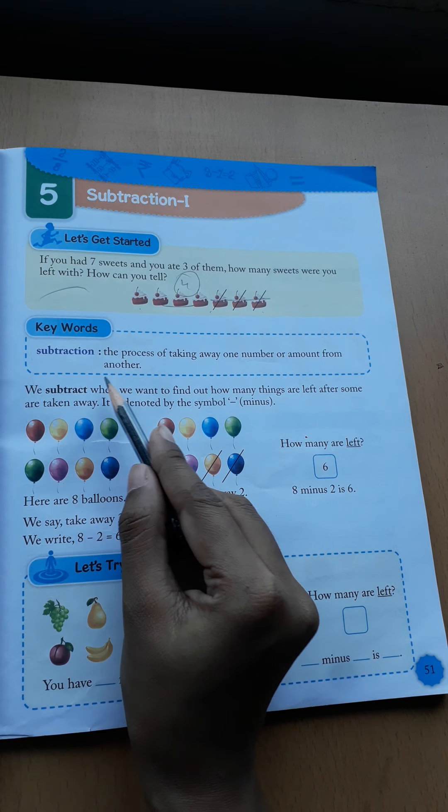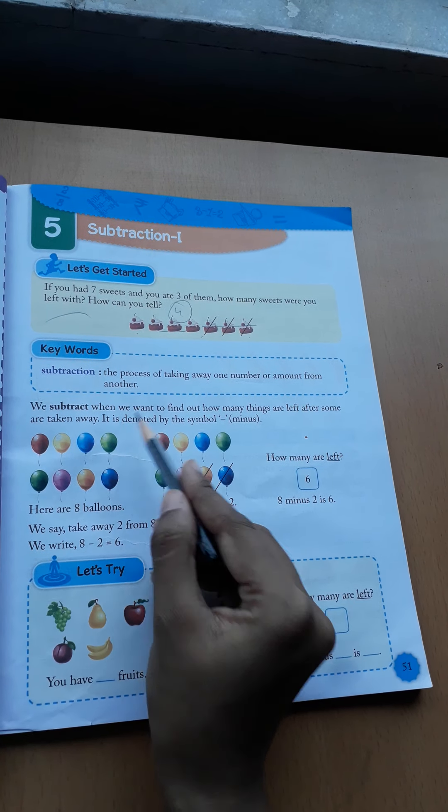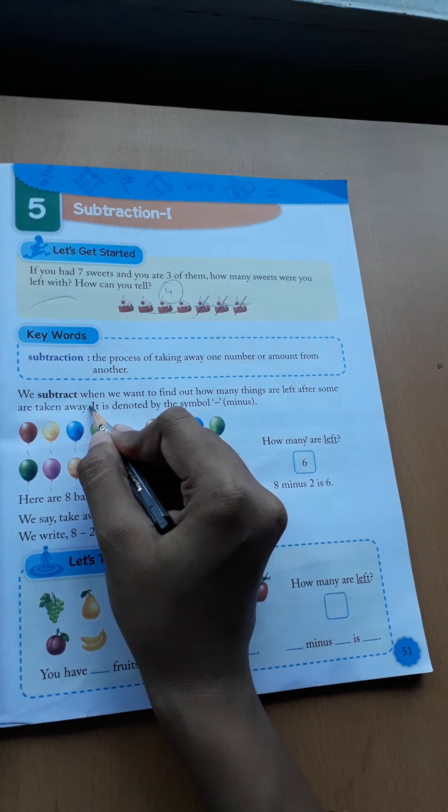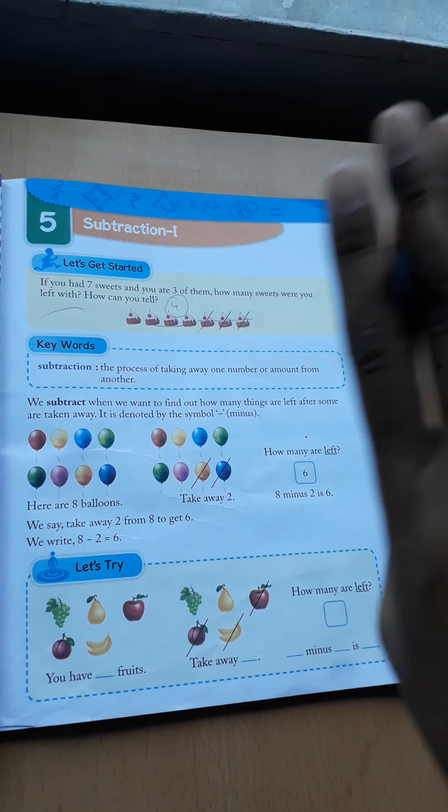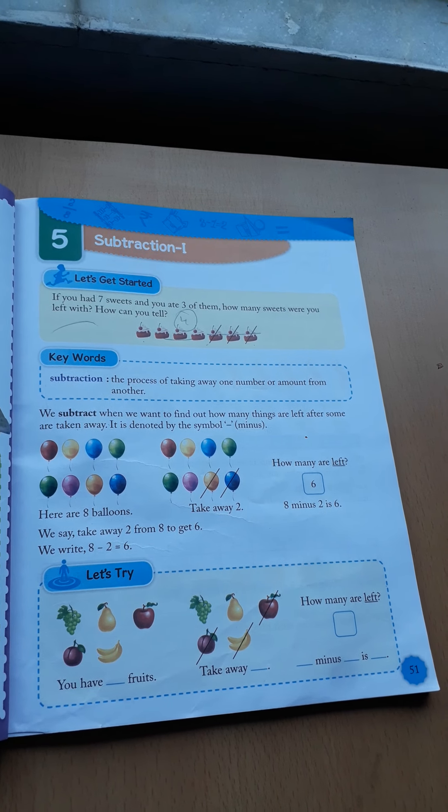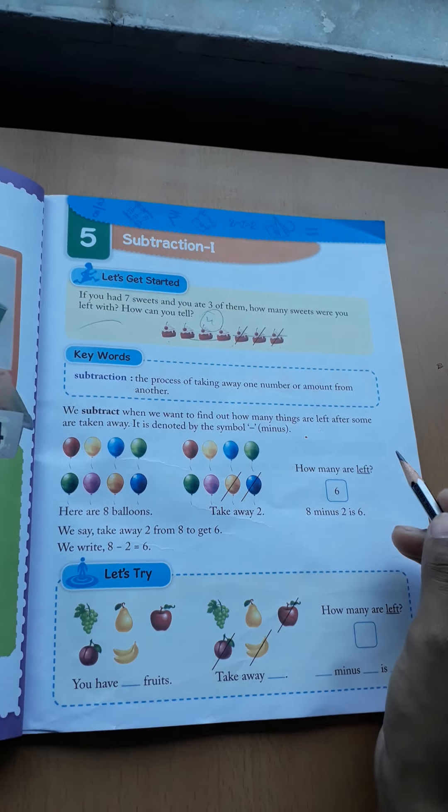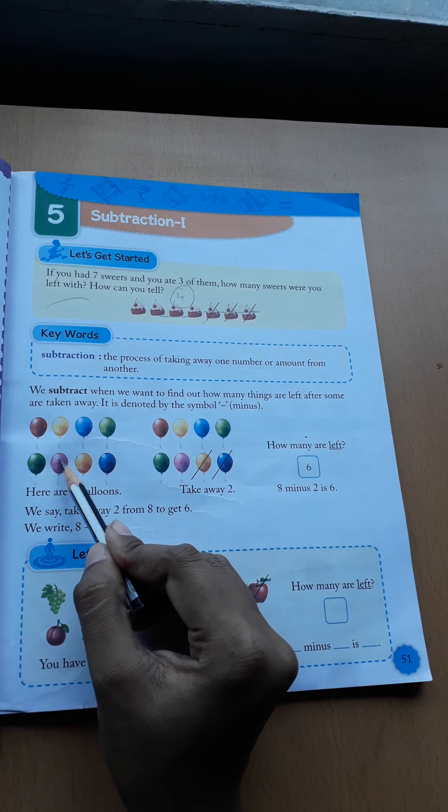We subtract when we want to find out how many things are left after some are taken away. How much left with us? For example, see here are eight balloons - one, two, three, four, five, six, seven, eight.